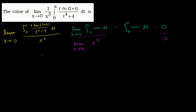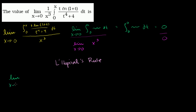The bell should be ringing loudly in your brain: L'Hôpital's Rule. This tells us if we evaluate the limit of the numerator and denominator as x approaches 0 and get an indeterminate form, then this limit equals — assuming the limit exists — the limit as x approaches 0 of the derivative of the numerator over the derivative of the denominator.